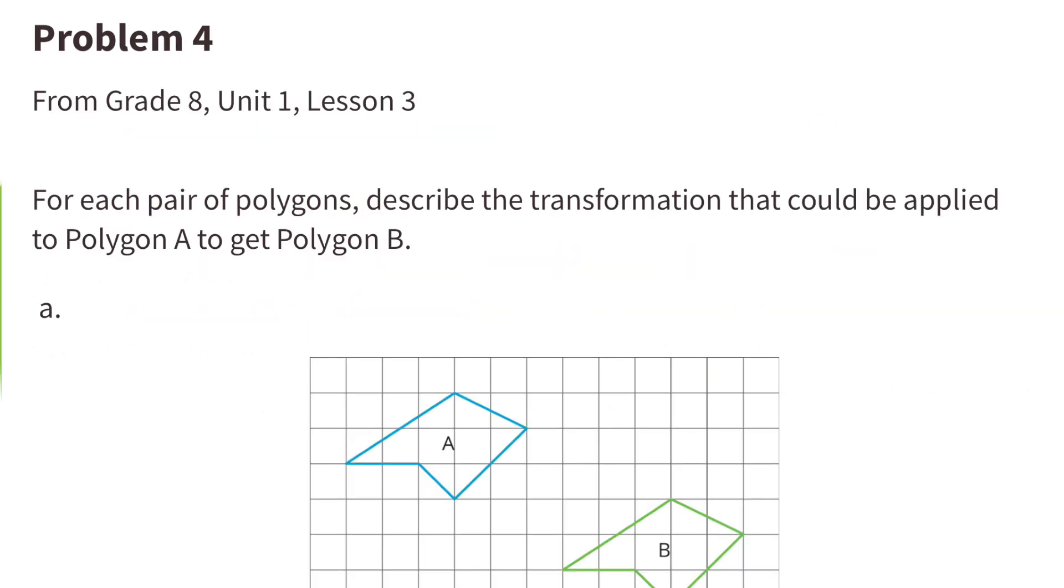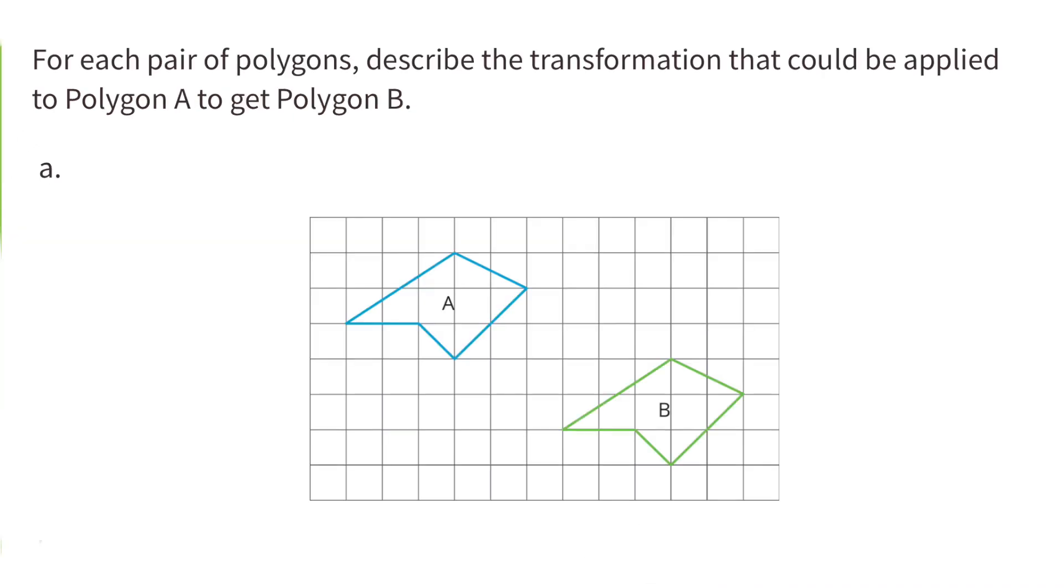Number 4. For each pair of polygons, describe the transformation that could be applied to polygon A to get to polygon B.